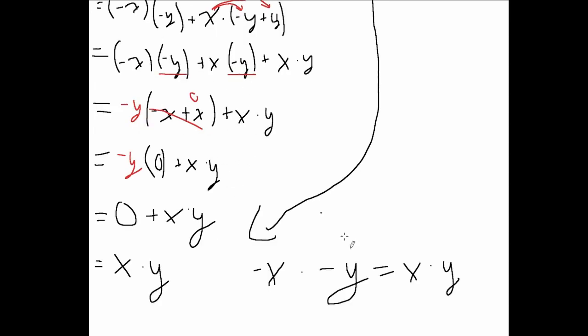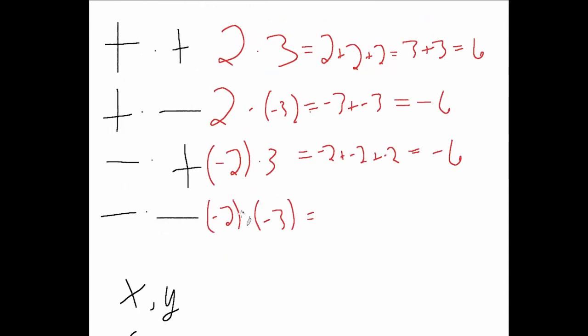So from this proof, we can determine that this answer will just be 2 multiplied by 3, which is equal to 3 plus 3, or 2 plus 2 plus 2, which will equal 6.